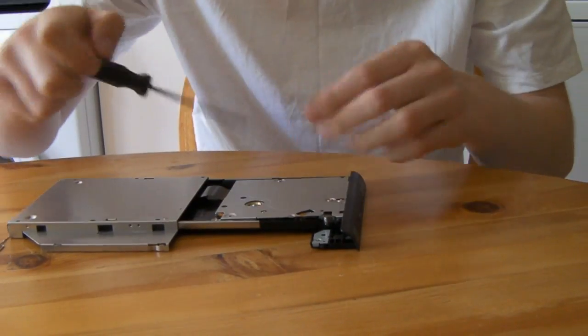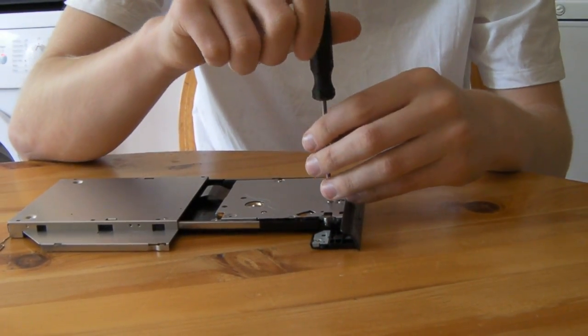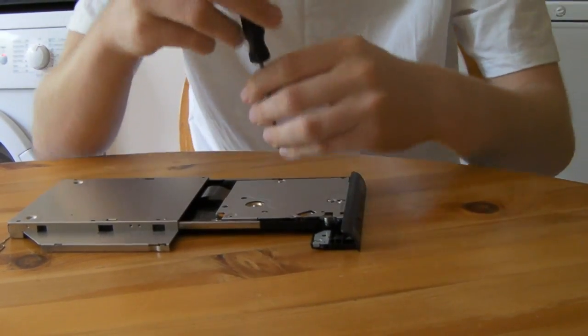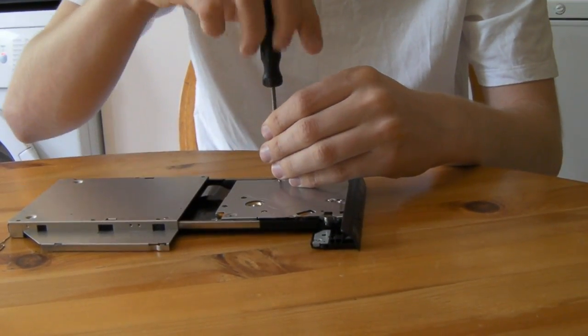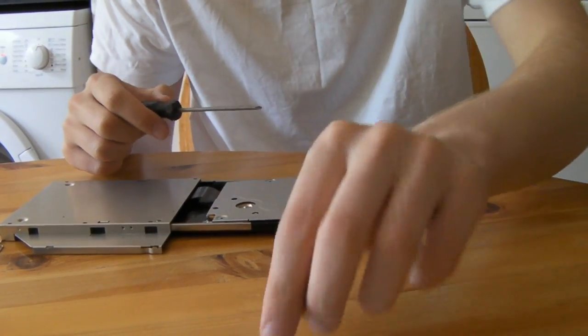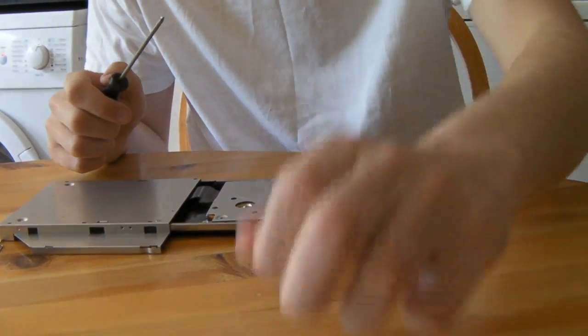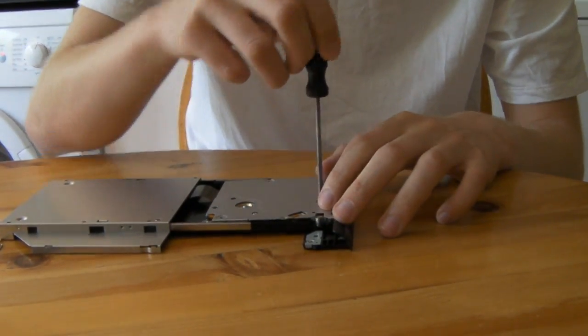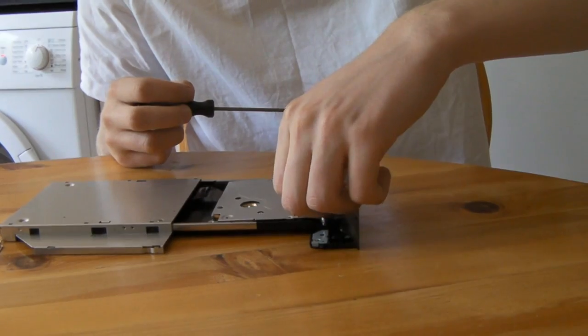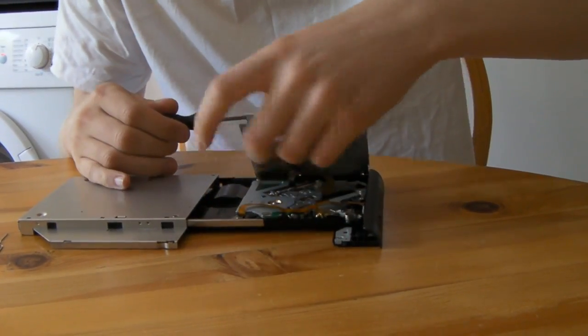As you can see there's more screws on the bottom. We need to get them undone. Sorry if this seems tedious, I just want to show you everything that you'd have to do. So yeah, quite a few on the bottom. Once you've got all the screws out however, the thing just pops out. See it's nearly coming out now.